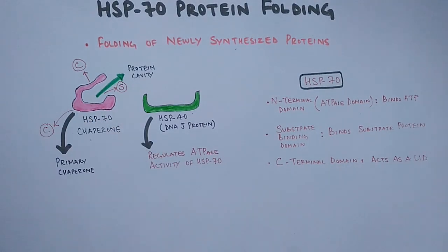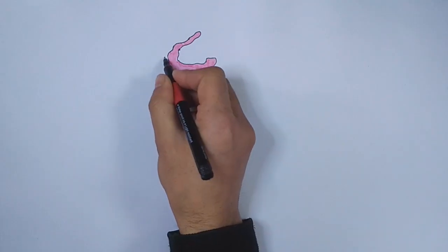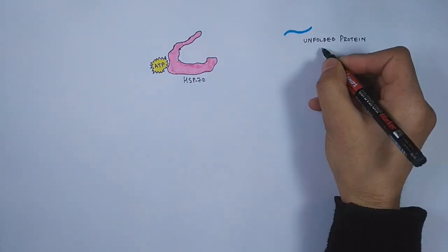Now let's see the mechanism of protein folding for the HSP-70 chaperone. First, we have HSP-70 protein bound to ATP. The ATP-bound HSP-70 is the open conformation of the HSP-70 molecule. On the other hand, we have the unfolded protein substrate, as shown in the diagram as a blue line.